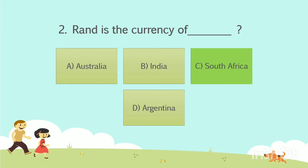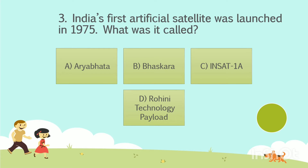Shall we go to the next question? Question No. 3. India's first artificial satellite was launched in 1975. What was it called? Option A: Aryabatta. Option B: Bhaskara. Option C: Insat-1A. Option D: Rohini Technology Payload. Your time starts now. The answer is Option A: Aryabatta.